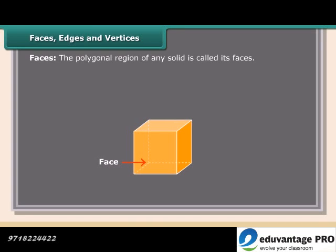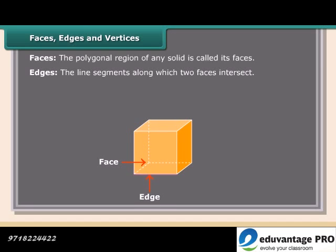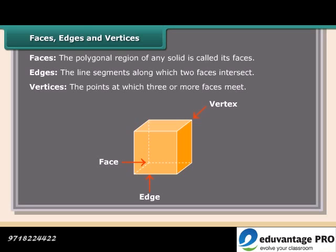Faces: the polygonal region of any solid is called its face. Edges: the line segments along which two faces intersect are called edges. Vertices: the points at which three or more faces meet are called vertices.